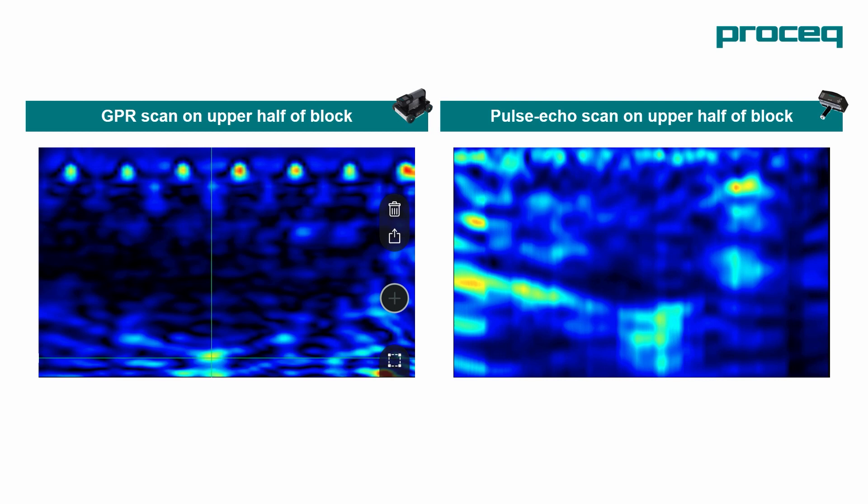With GPR, the back wall is not so clear. With the pulse echo, it's very clear on the left hand side but there's shadowing of the back wall on the right hand side.